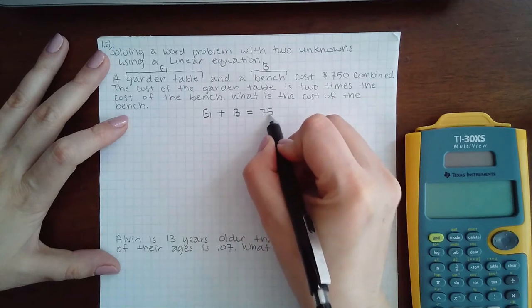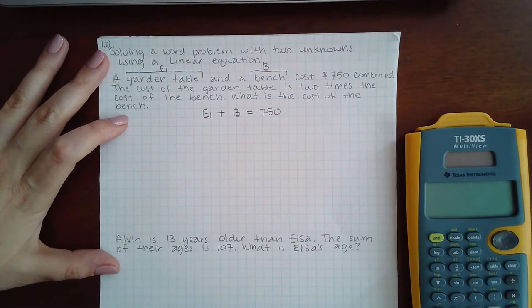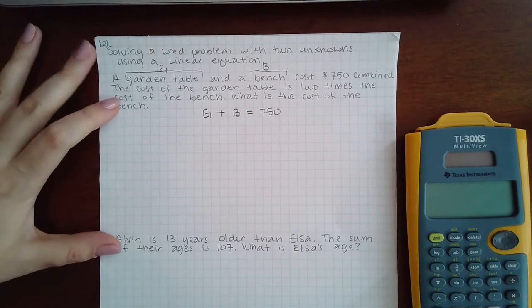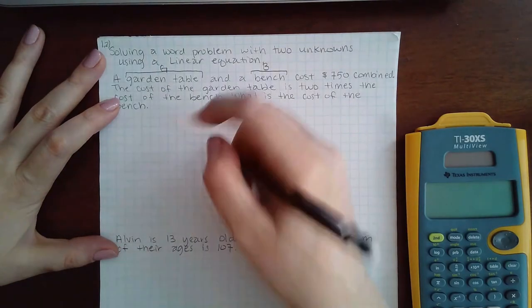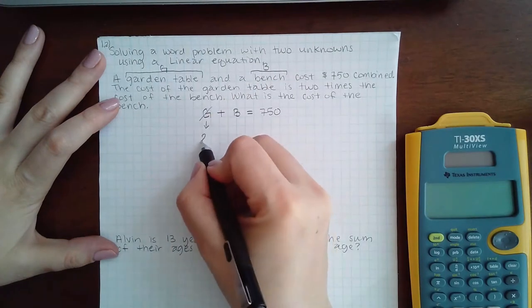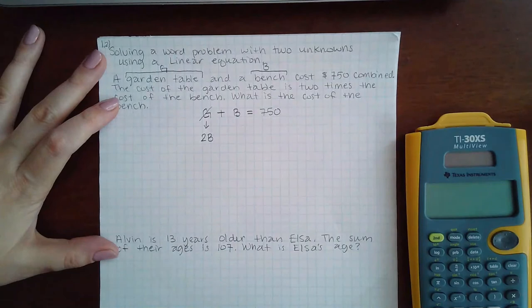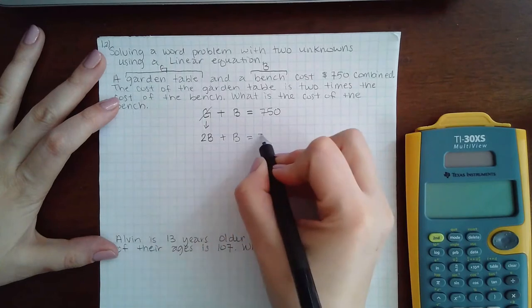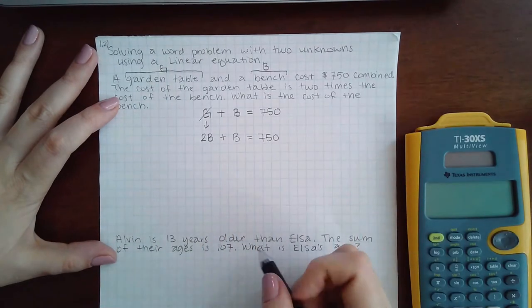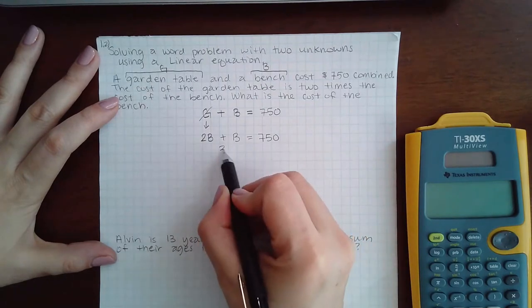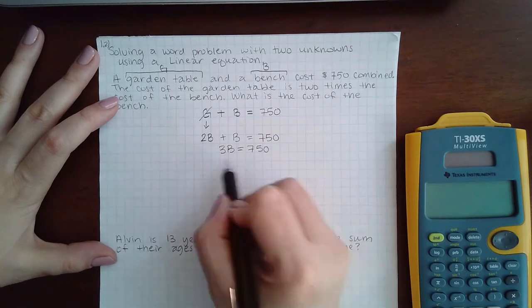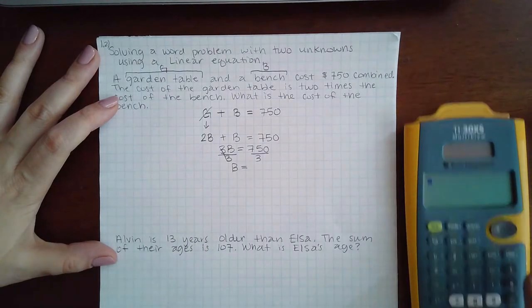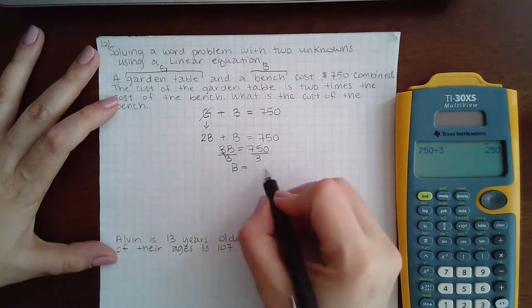The next sentence says that the cost of the garden table is two times the cost of the bench, which means instead of using G we can use 2 times the cost of the bench. So in its place we can use 2B. When I combine these like terms I get 3B equals 750. If I divide by my coefficient I get B equals, I believe it's 250. I always use my calculator to make sure, yep 250.